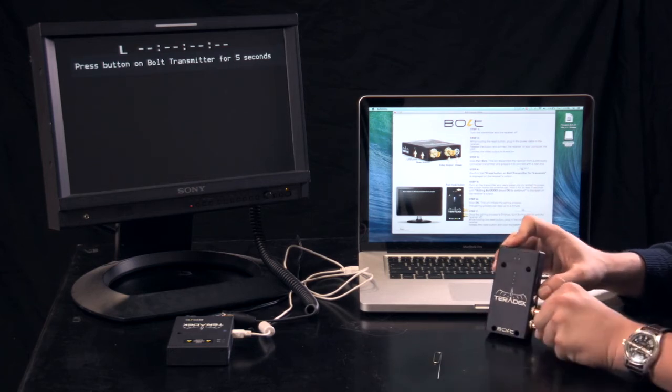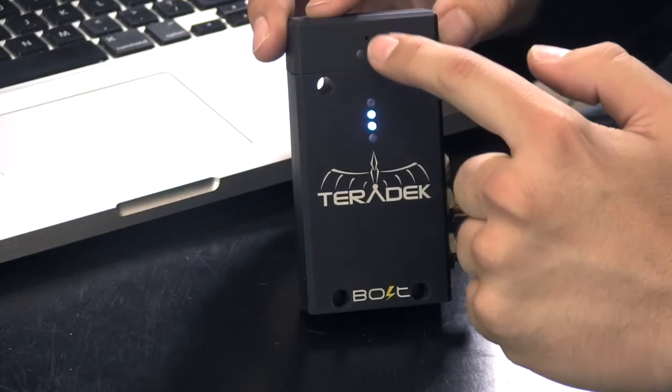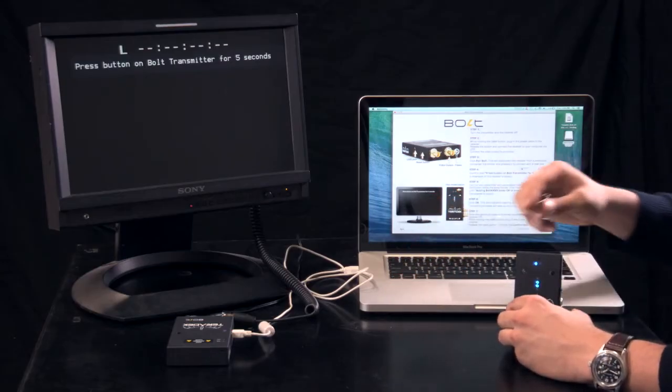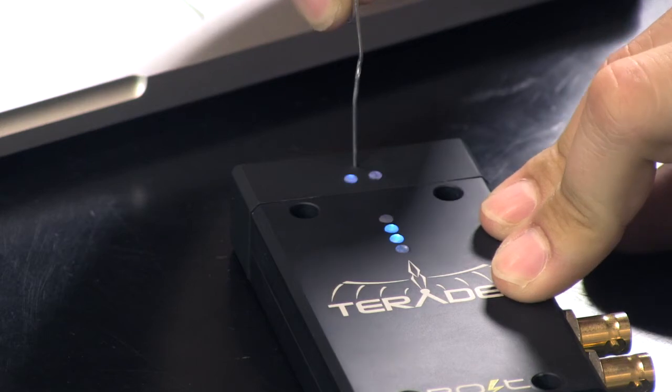Now, let's pair the transmitter. Turn on the transmitter. Wait until the left LED is blinking. Using a paper clip, press the button inside the antenna cap.